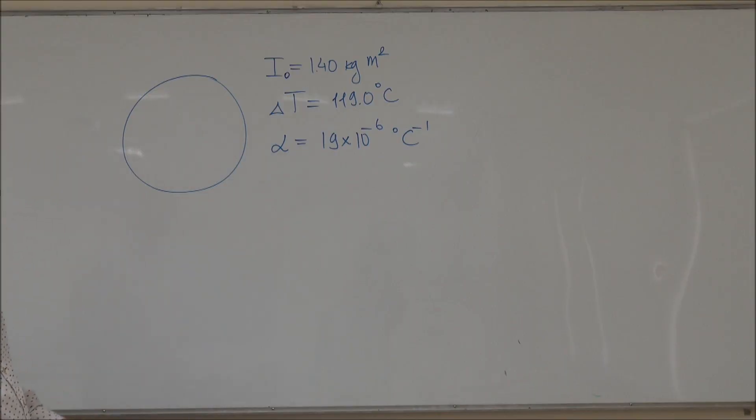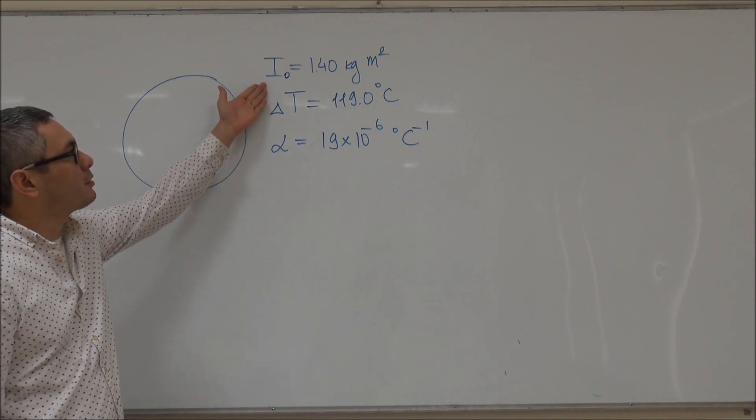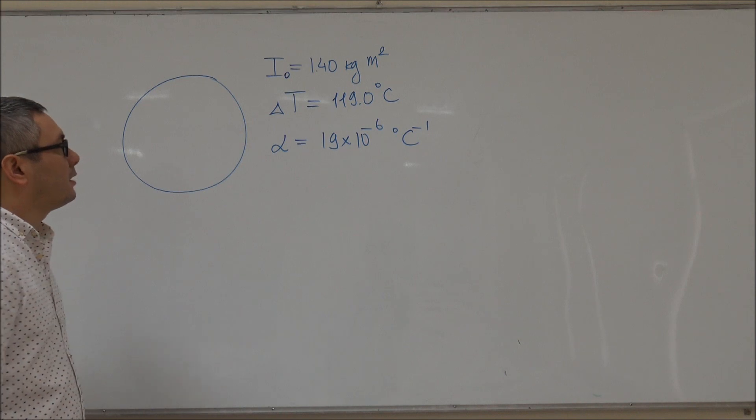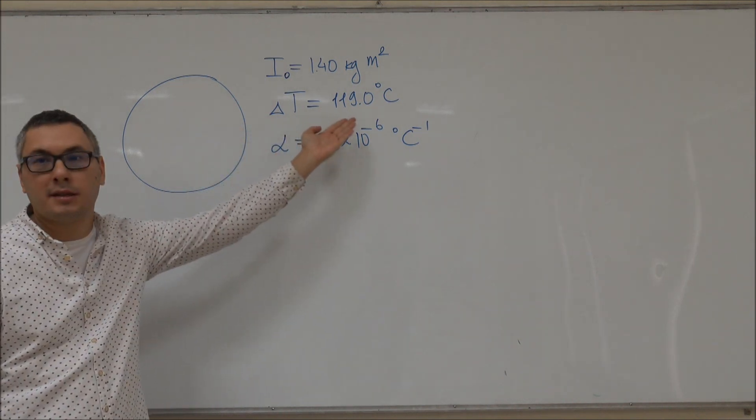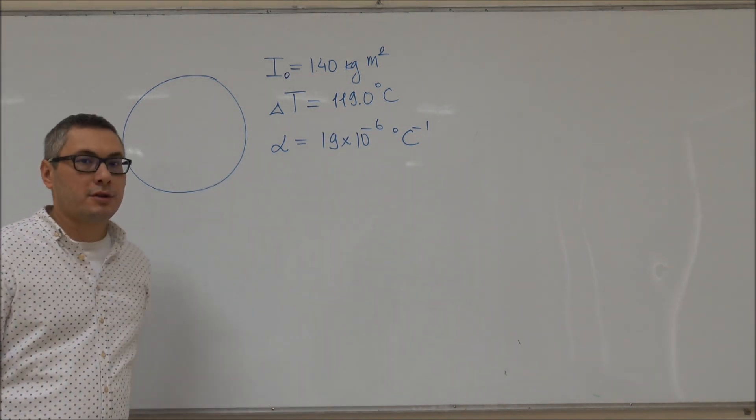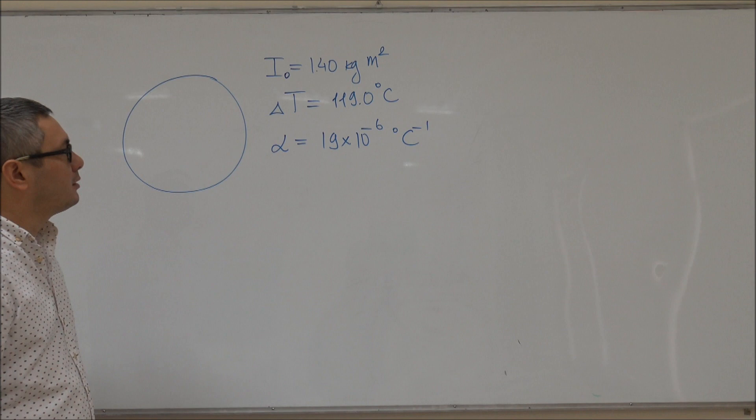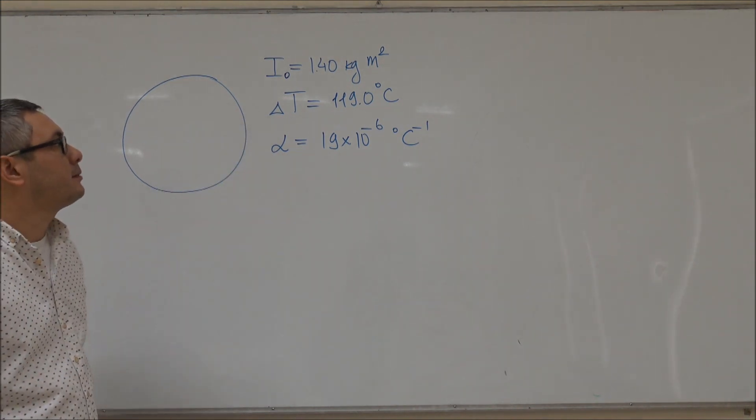Okay, so in this problem we are given a wheel made out of brass and we know the moment of inertia of the wheel. Then we are told that the temperature of the wheel is increased by 119 degrees Celsius. If we know the coefficient of thermal expansion, what is the new moment of inertia after this increase in temperature?